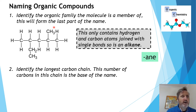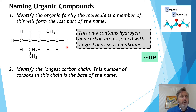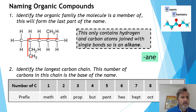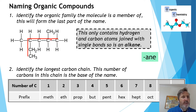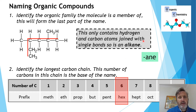The second step is to identify the longest continuous chain of carbons in the molecule. Along the horizontal you might count five, but that's not correct. The longest chain is actually one, two, three, four, five, six — we have six carbons in our longest chain. This is our main chain. The basis of the name — the 'surname' if you like — is going to be six, and six is 'hex', so the main part of this name is hexane.